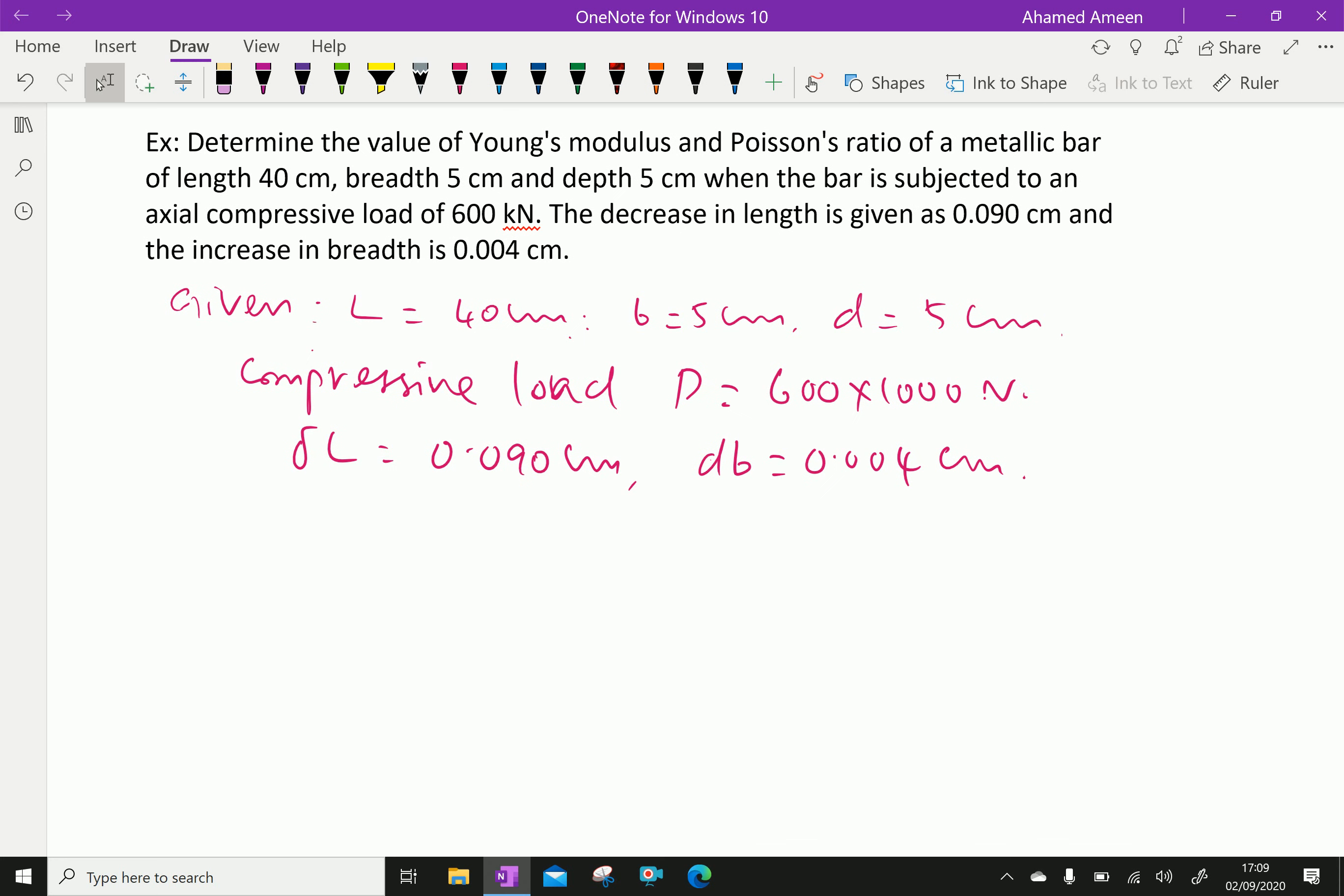Now, longitudinal strain is given as delta L by L. Delta L is 0.090 cm over L equals 40 cm, which equals 0.00225.